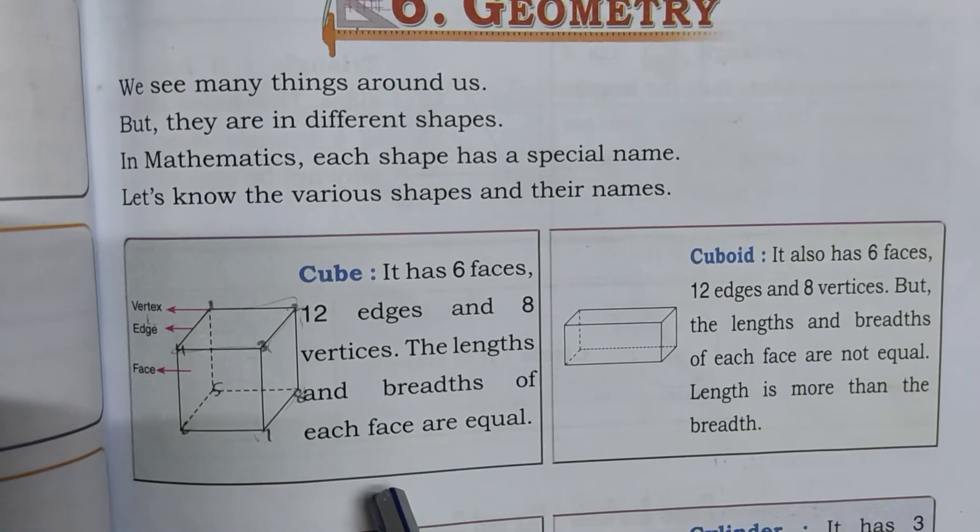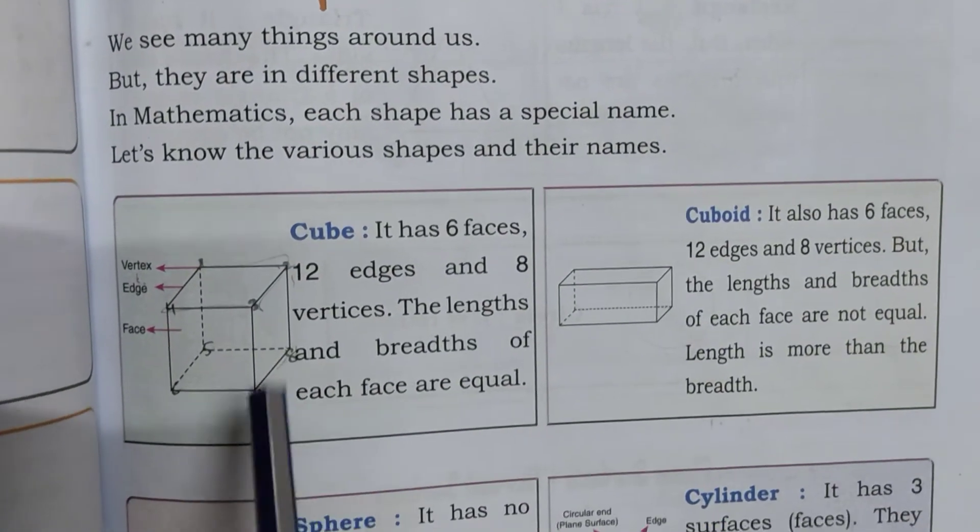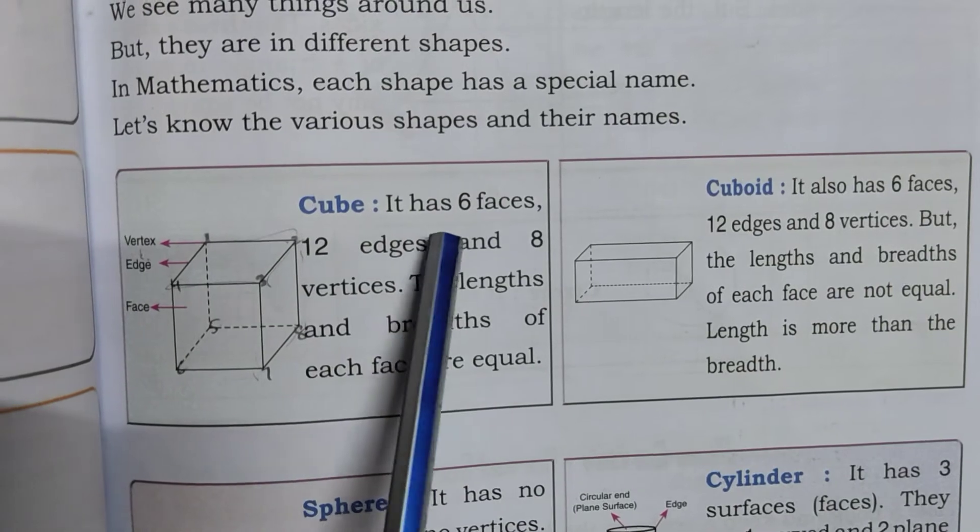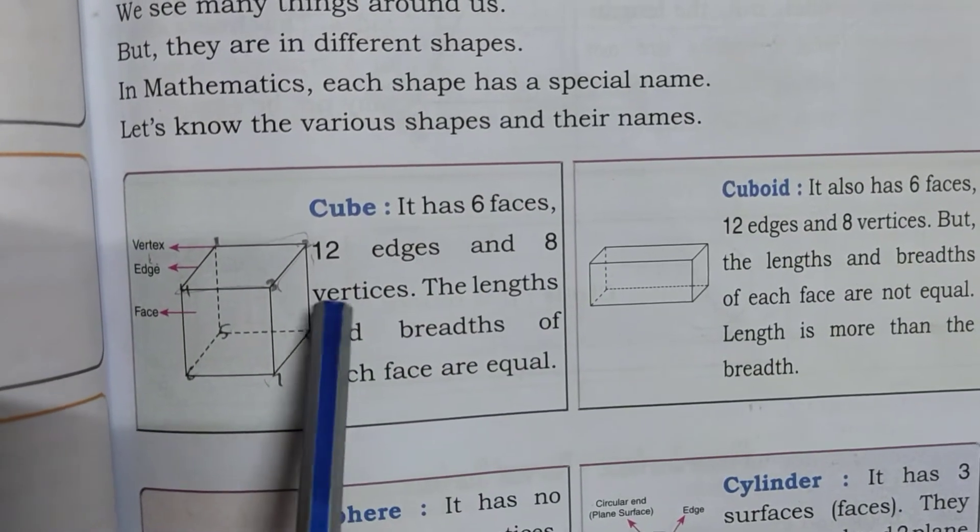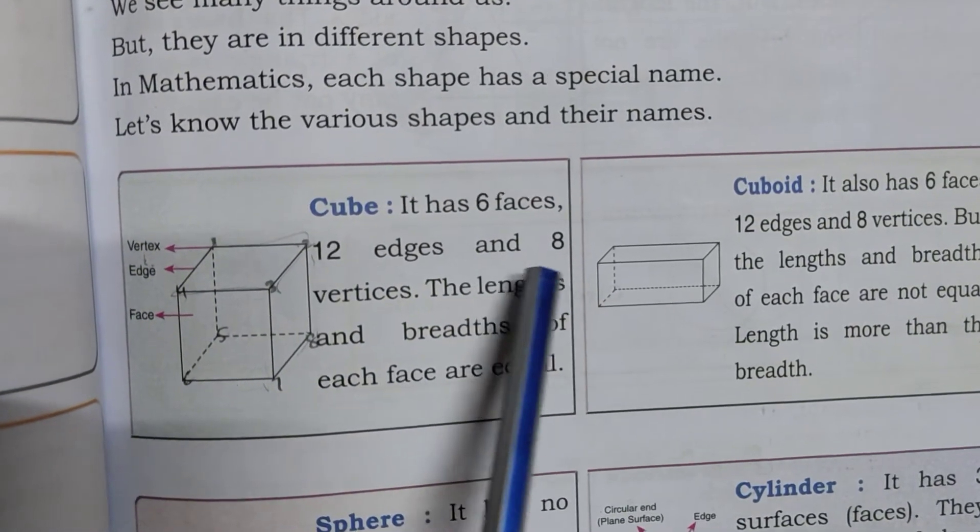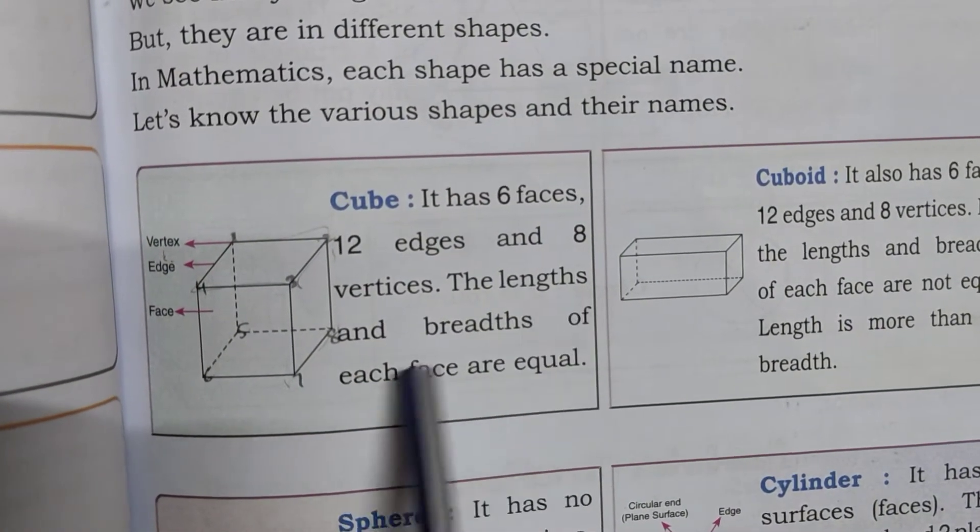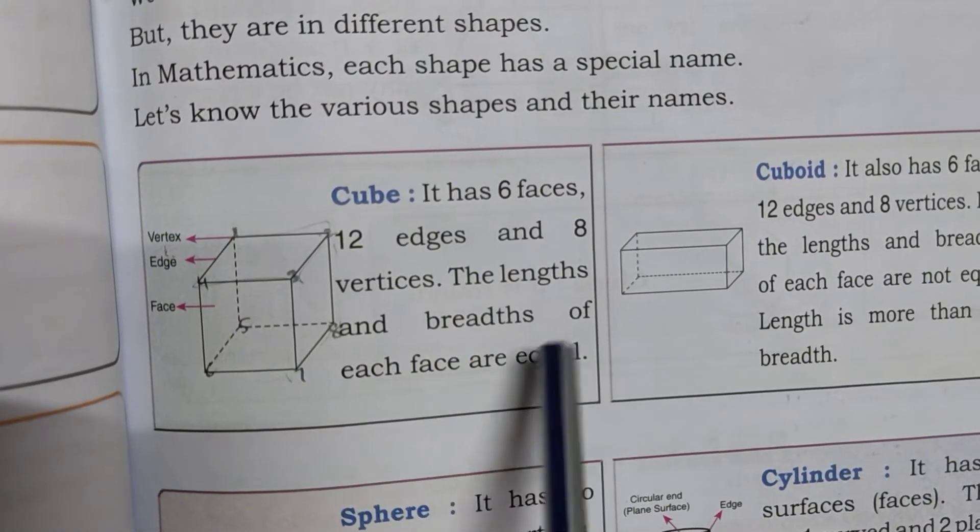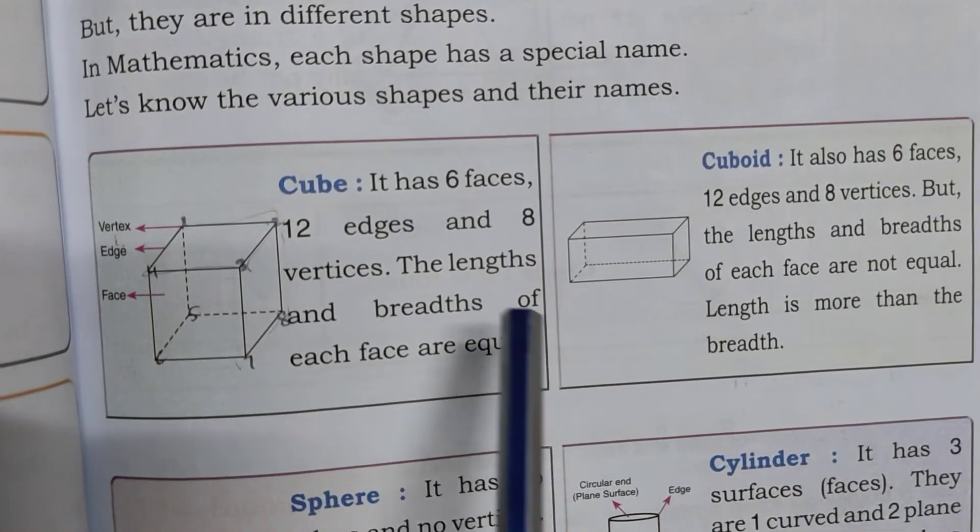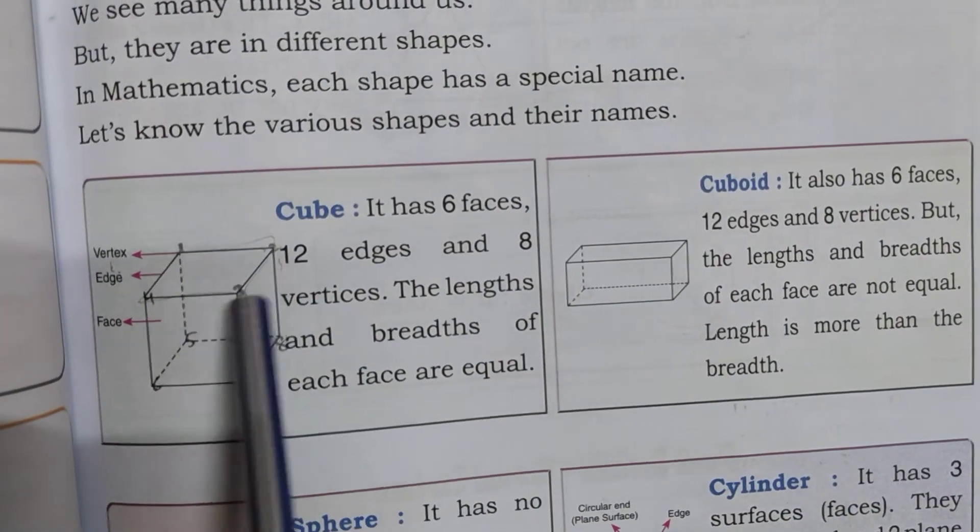Let's know the various shapes and their names. A cube has 6 faces, 12 edges, and 8 vertices. The lengths and breadths of each face are equal, as you can see in the picture.